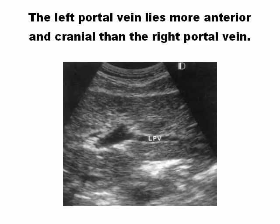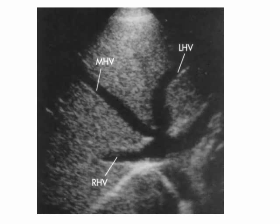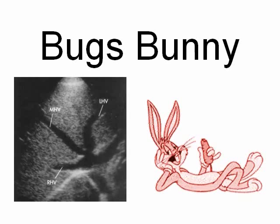The left portal vein is more anterior and cranial than the right portal vein. Here you can see the three portal veins — this is a part of the liver that sonographers call the 'box bunny.' In this transversal picture, you can see the right, middle, and left hepatic veins entering the IVC. The box bunny shows the right hepatic vein, middle hepatic vein, left hepatic vein, and the IVC.